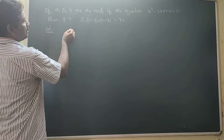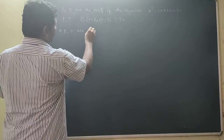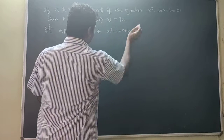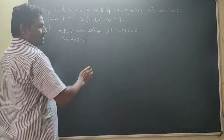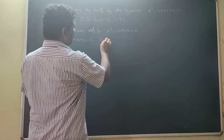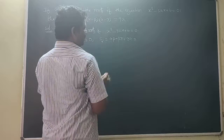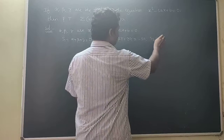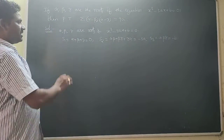So that is the given equation. Alpha, beta, gamma are roots of x³ - 3x + b = 0. What is S1? Alpha + beta + gamma — there is no x² term, so alpha + beta + gamma = 0. What is S2? Alpha·beta + beta·gamma + gamma·alpha = -3. And S3 = alpha·beta·gamma = -b.